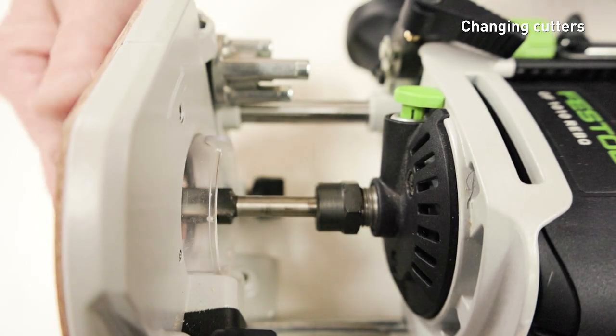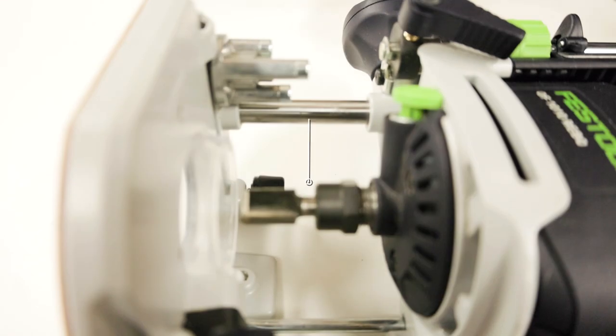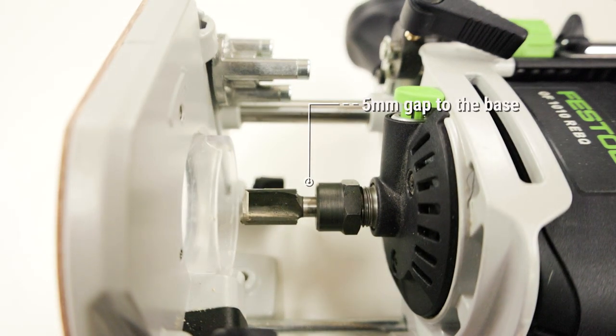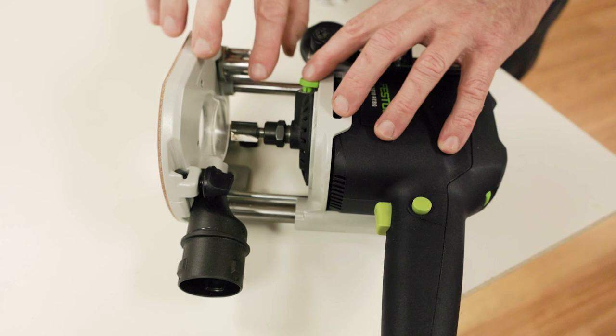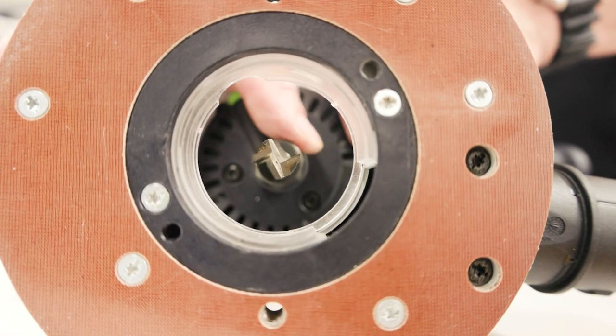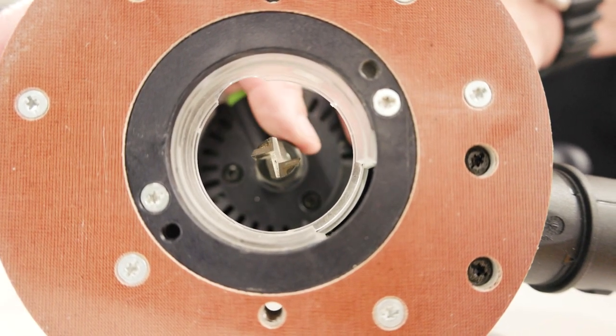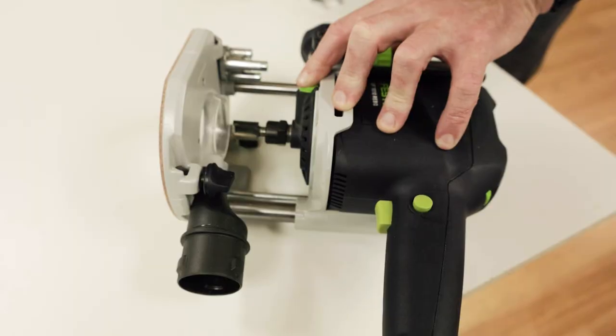To fit a router bit, insert the router bit into the clamping collet to within 5mm of the base. Press the spindle stop button and turn the spindle until it locks in place. Tighten the collet nut with the 19mm spanner.